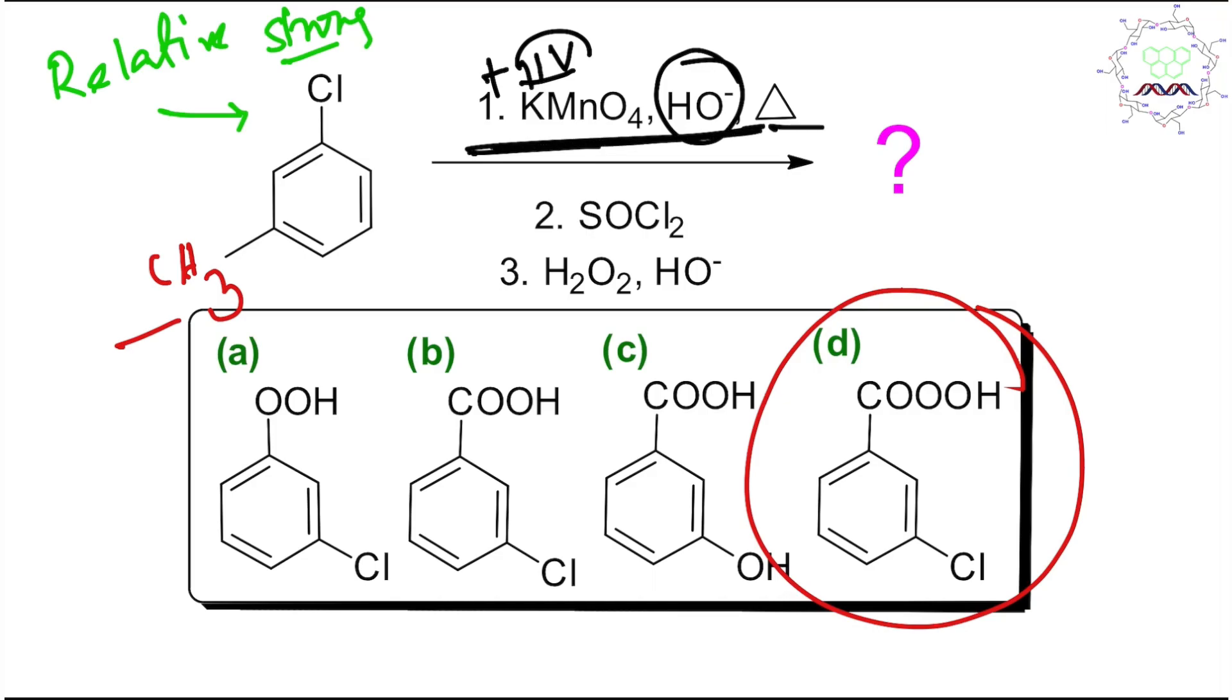Point number two: thionyl chloride converts acid to acid chloride. Last tip: OH-, hydrogen peroxide, means produce hydroperoxide and that will attack the corresponding acid chloride. So ultimately it will produce this.